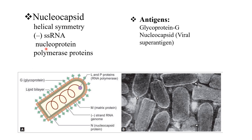It contains nucleoprotein and polymerase proteins. Regarding antigens, we have glycoprotein G and the nucleocapsid. The nucleocapsid is a viral superantigen — a class of antigen that results in excessive activation of the immune system.